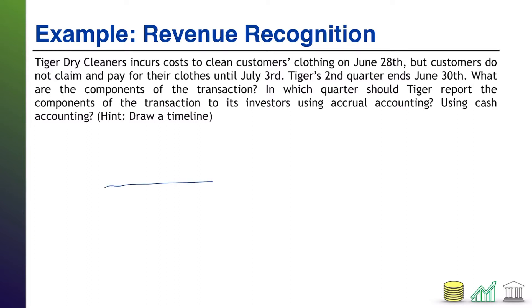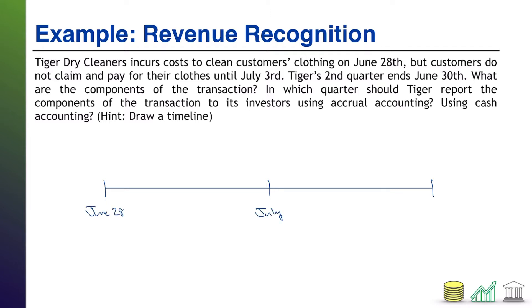I'm going to draw a timeline that contains our activity and our key dates. There are only three dates in this one: June 28th, July 3rd — sorry, July 3rd moves over — and June 30th, which comes between them. There's our three key dates. June 30th has no real economic activity; it's just telling us the second quarter is ending that day.